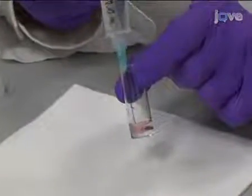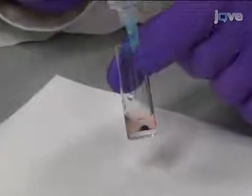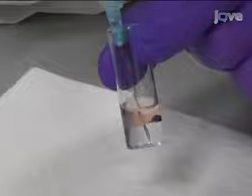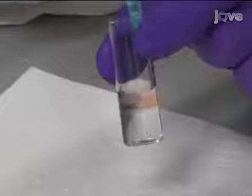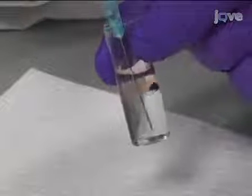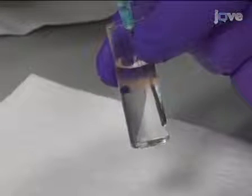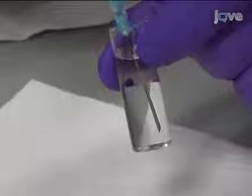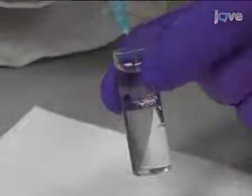Start by inserting the needle along the side of the tube at the periphery of the solidified histogel disk. Continue by rotating the needle along the side of the tube while at the same time slowly pushing the formalin solution through the syringe. Observe the separation of the histogel button from the flat bottom of the glass tube.